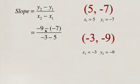-9 minus -7 is -2, and -3 minus 5 is -8. Watch your signs when working with integers. This simplifies to positive 2 over 8, which reduces to 1/4. So the slope of the line is 1/4 for the line between (5, -7) and (-3, -9).